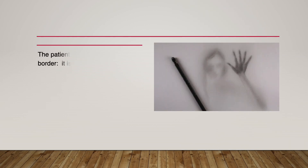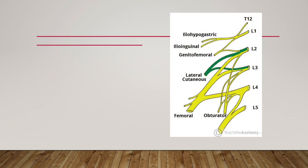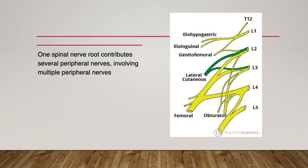If the patient could not describe the border and points ambiguously, it is spinal radiculopathy. If you have basic neuroanatomic knowledge, it is easy to understand — one spinal nerve root contributes to several peripheral nerves.